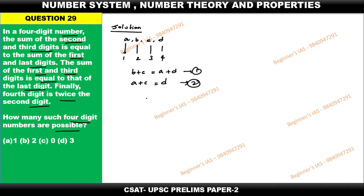Now moving with the next equation. Finally, fourth digit is D. So D is equal to twice of second, which means 2B. So I am just considering this as equation number 3.